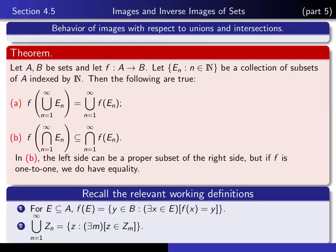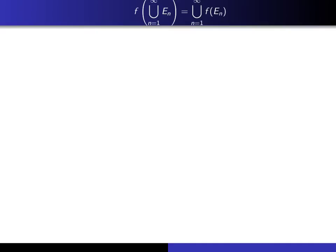And this is the working definition of the union of a bunch of sets. It's the set of all Z such that there exists an index M such that Z is in Z sub M. In other words, the union is the set of all things that lie in at least one of those sets, Z sub M.